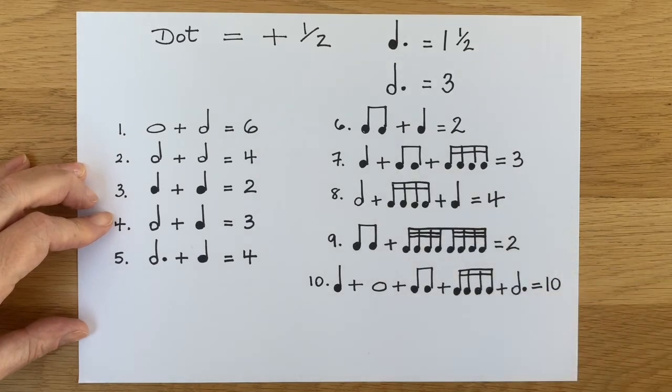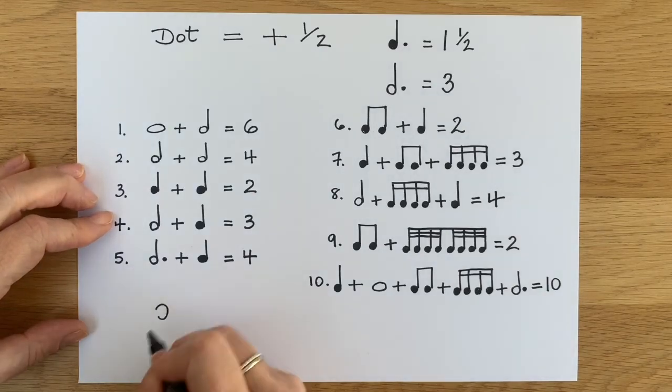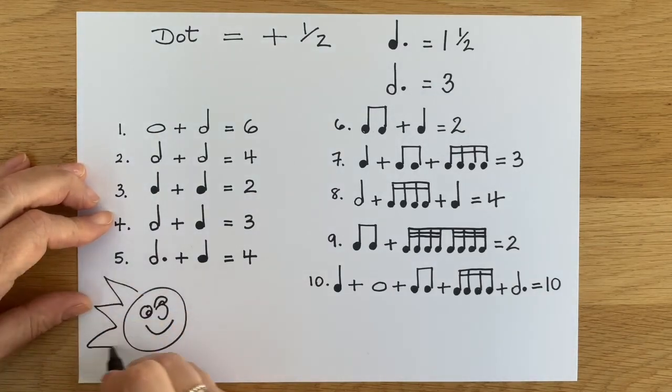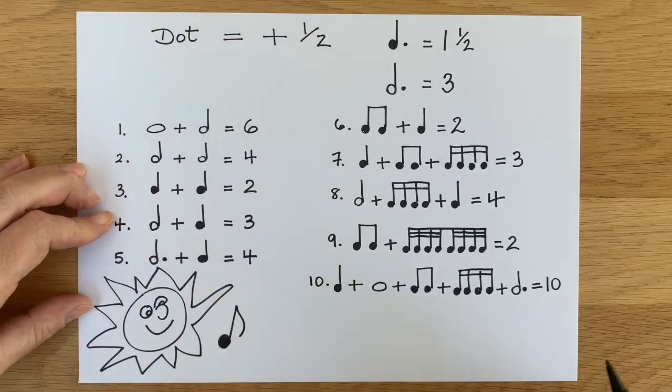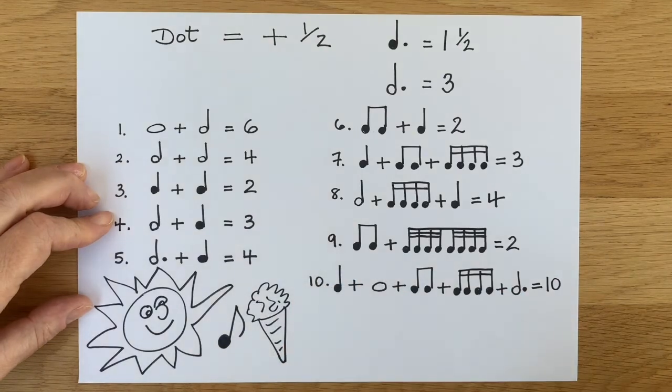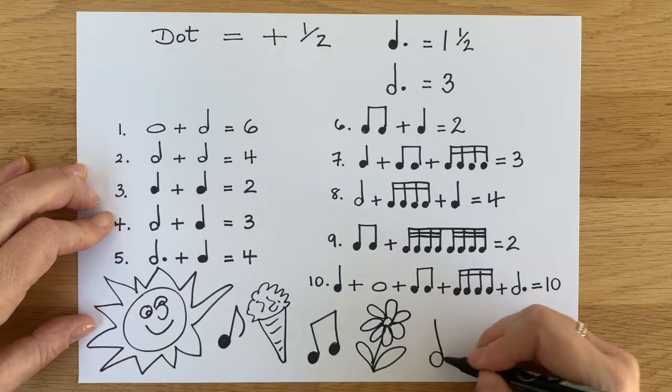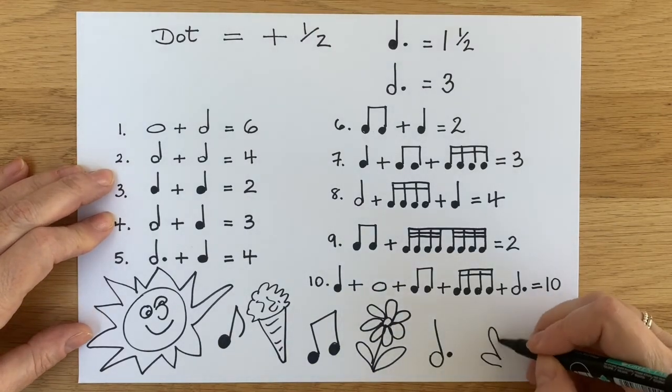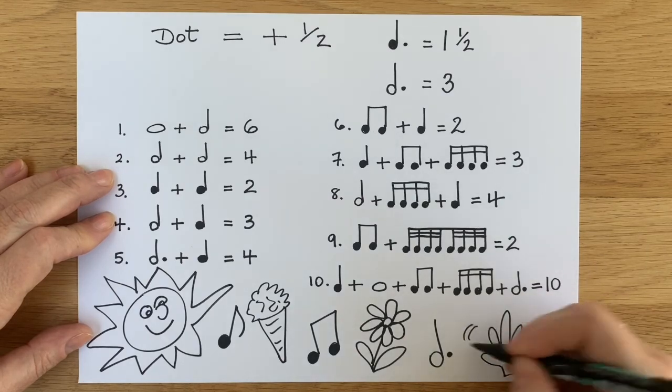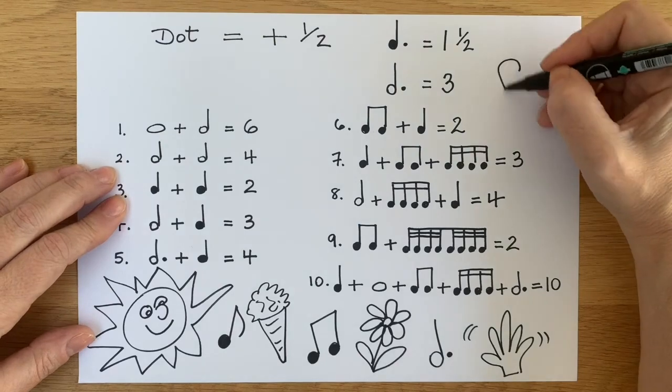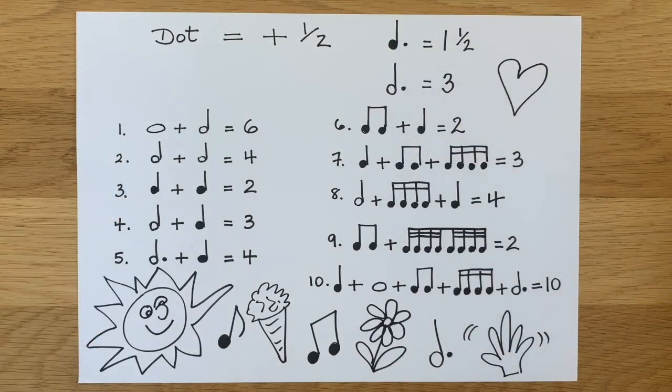Now, I want you to have some fun and do some drawings on the page. You can colour them in if you like. And the drawings are of the things that you've been enjoying recently. You can have a look at mine, but they all include music, of course. There's the sun. And I've enjoyed a few ice creams. And some more music. And the flowers in my garden as well. And let's not forget the dotted notes. So it's goodbye for now. Hope you've had a great time and had fun doing your colourful drawings of the things you've been enjoying. Draw a little heart to finish and I'll see you next time. Bye.